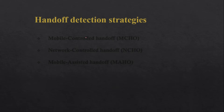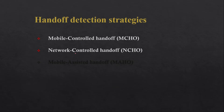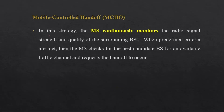In a cellular system we have three types of handoff detection strategies. First, Mobile Control Handoff (MCHO), where the handoff decision is completely taken by the mobile. Second, Network Control Handoff (NCHO), where the network is responsible for the handoff decision. Third, Mobile Assisted Handoff (MAHO). Let's see each of these in detail.